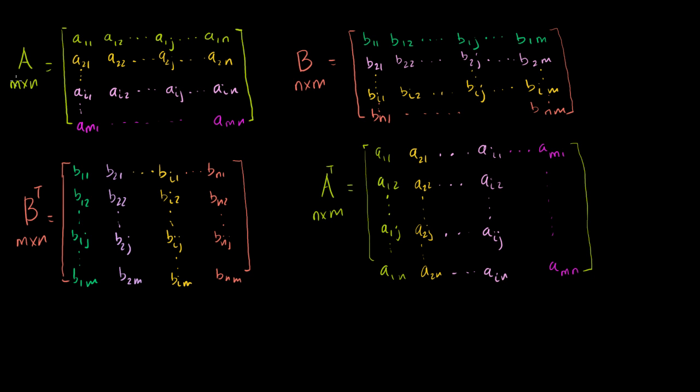I've got a handful of matrices here. I have the matrix A that's an m by n matrix. You can see it has n columns and m rows. And actually, let me throw in one entry there. It might be useful.